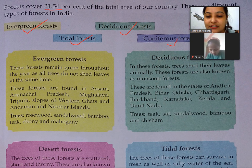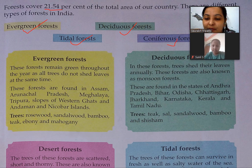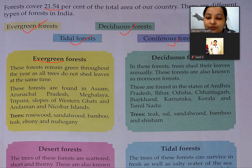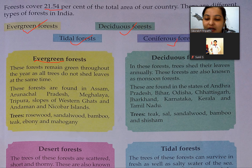Evergreen forests remain green throughout the year as all trees do not shed their leaves at the same time. Jo hamesha green rehte hain unhe Evergreen forest kehte hain. These forests are found in Assam, Arunachal Pradesh, Meghalaya, Tripura, slopes of Western Ghats and Andaman and Nicobar Islands.